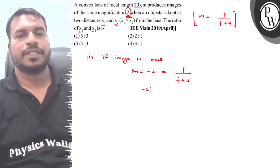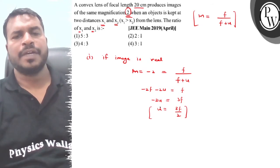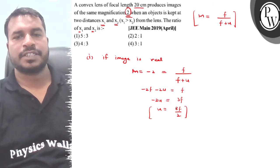So here we have minus 2f minus 2u equal to f. That means here we have 3f equal to minus 2u. So if we remember u value, we get u equal to minus 3f by 2. The negative answer indicates the direction.